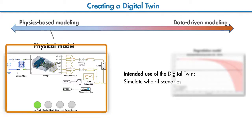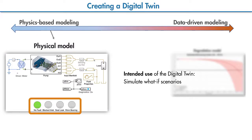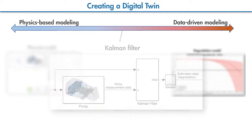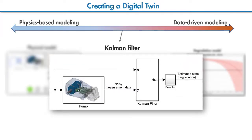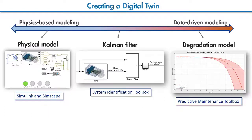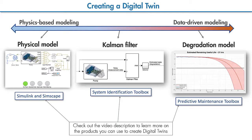Using this model, you can inject different types of faults and simulate the pump's behavior under different fault conditions. Similarly, a Kalman filter can also be used as a digital twin, which can model the degradation of the pump as a state and periodically update that state to represent the current condition of the pump. These are some examples of how a digital twin can be created. Based on the intended use, the digital twin can also be a combination of these models.